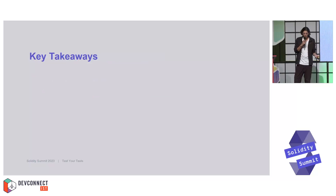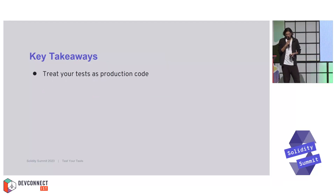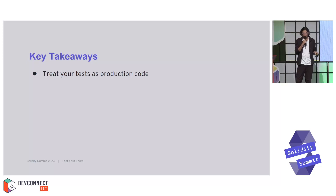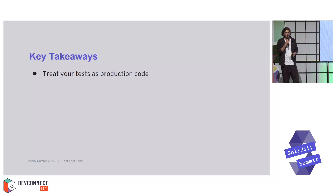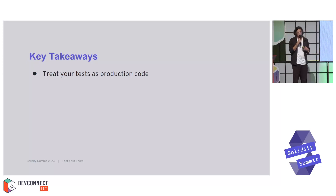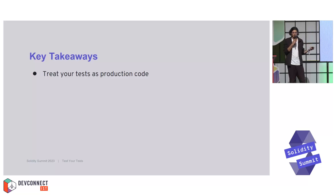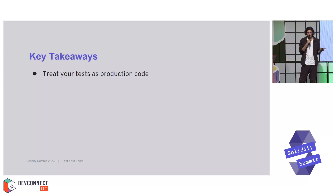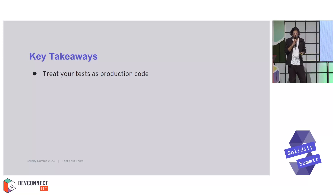To wrap up with key takeaways: treat your tests as production code. Your tests can contain bugs just the same way your production code can. The risks are that this could lead to a false sense of confidence, misleading outcomes where you might take a precondition as the true condition that doesn't reflect the actual implementation, or you could simply mask bugs.